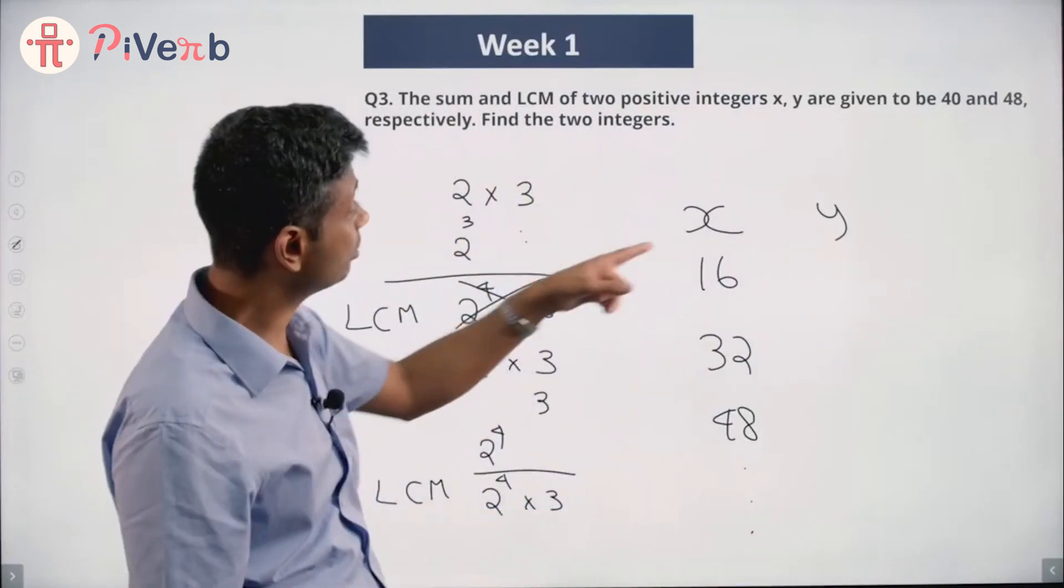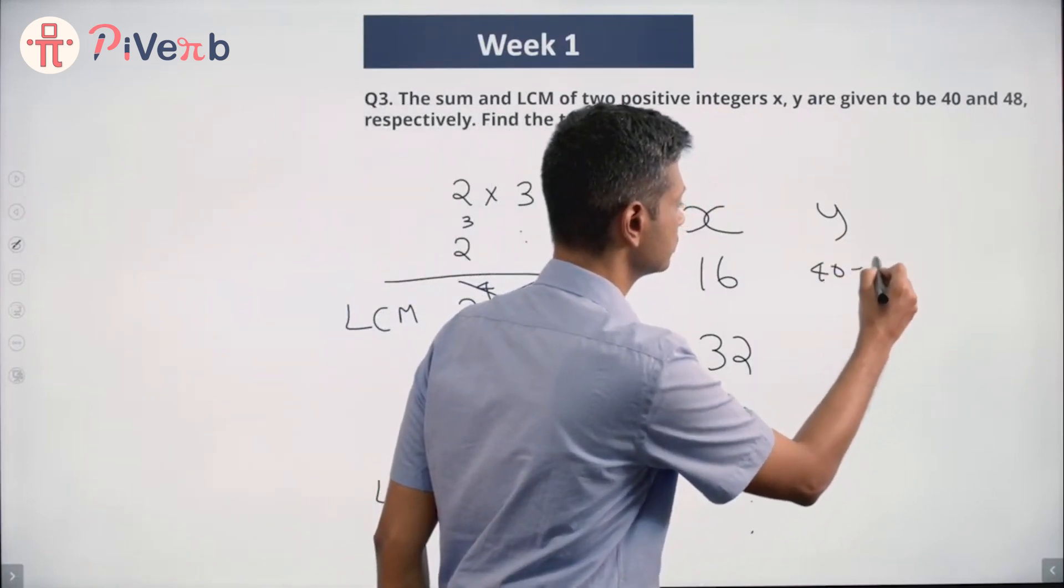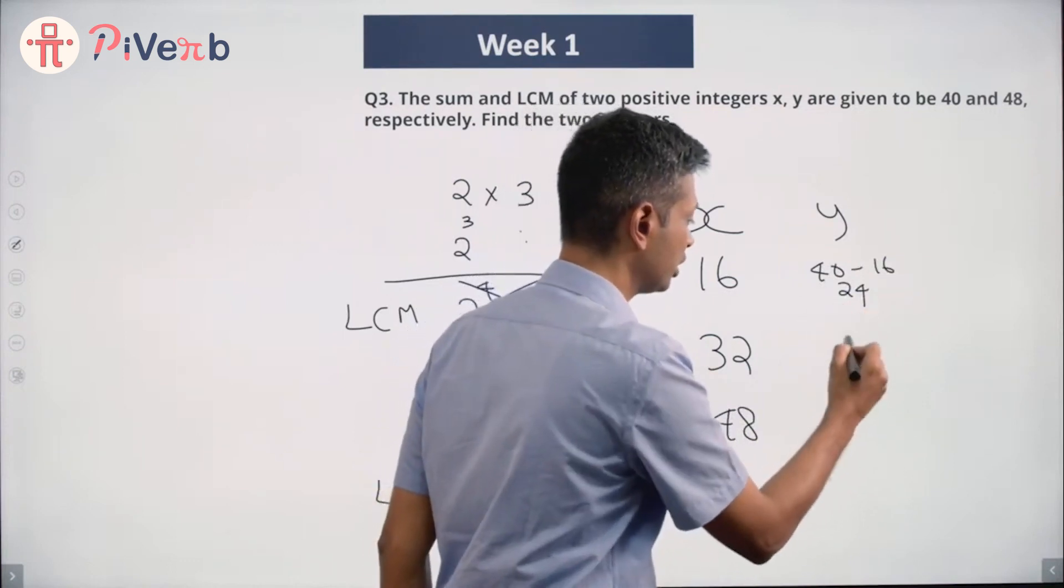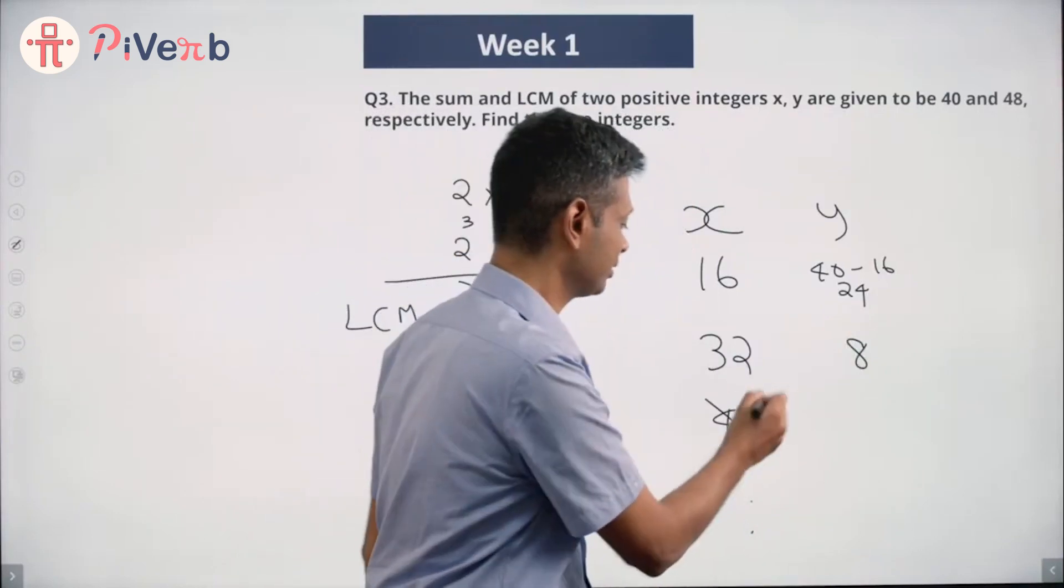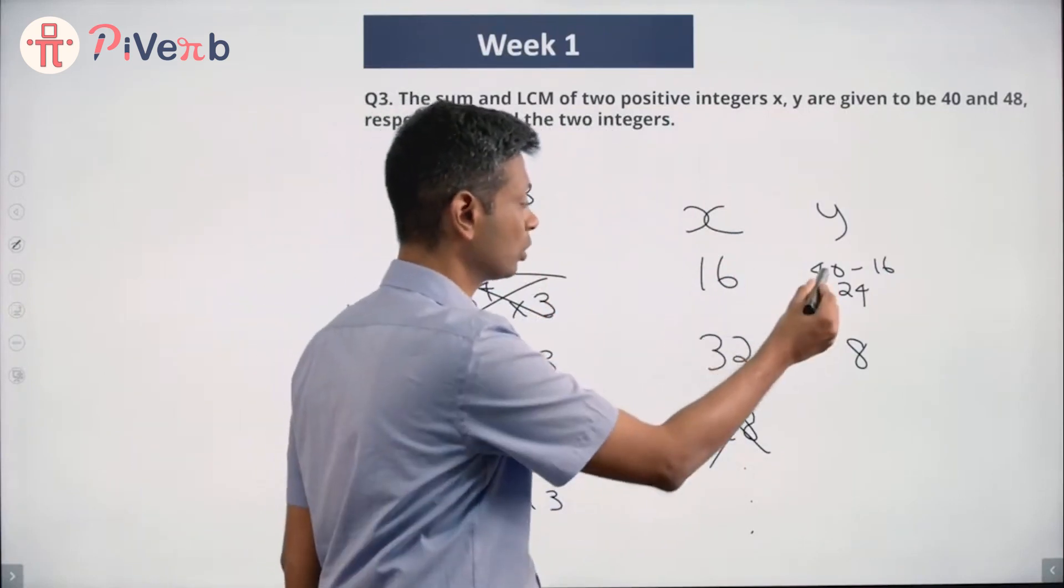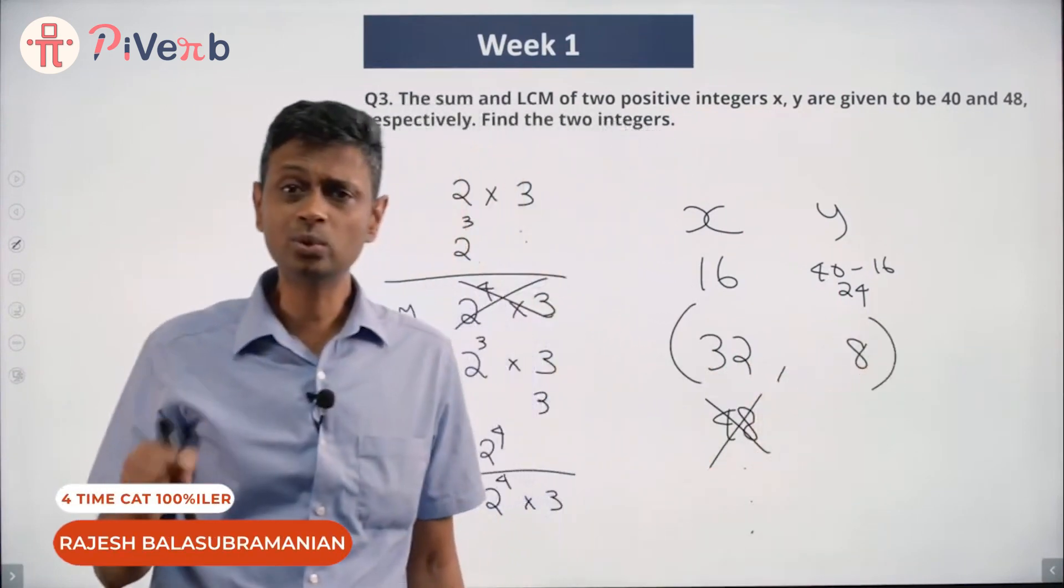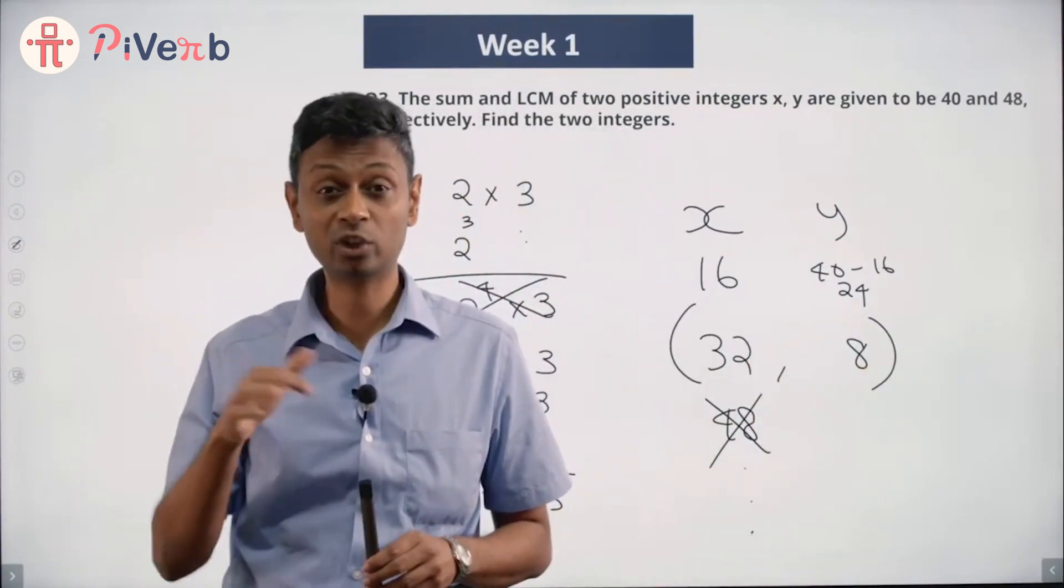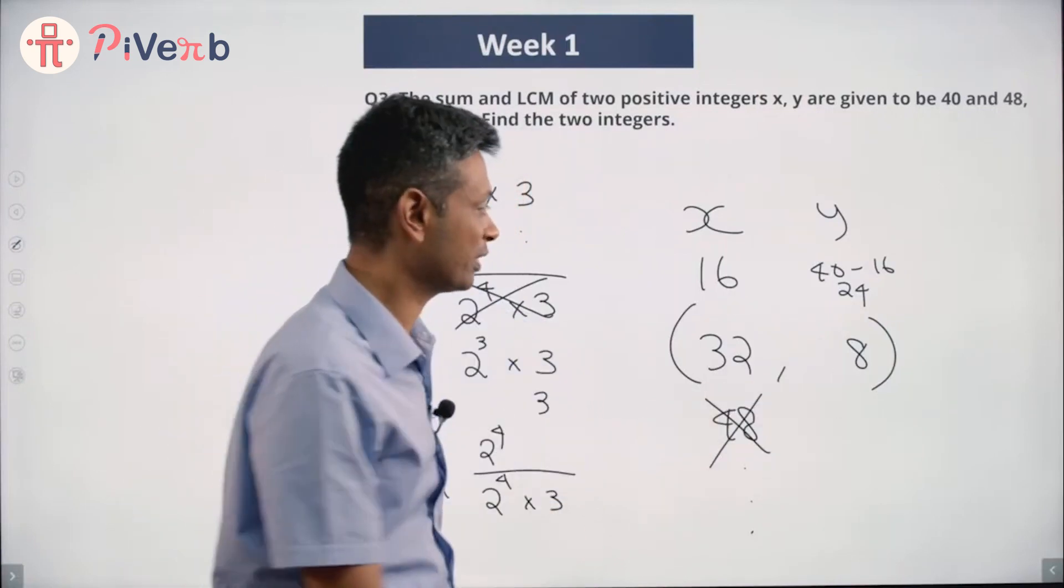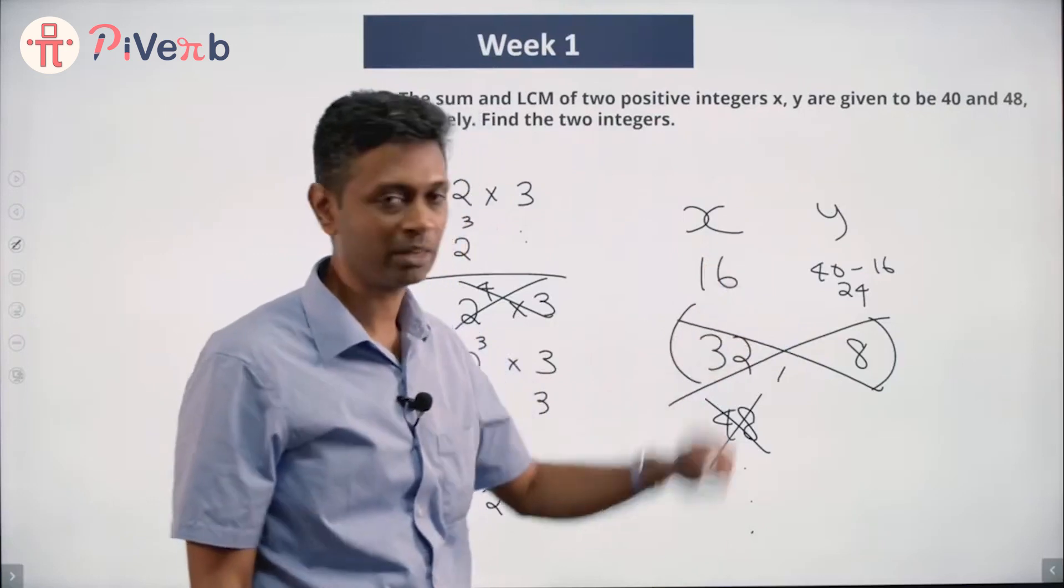We know that the sum of the two numbers is 40. So if this is 16, this number should be 40 minus 16, which is 24. If this is 32, it should be 40 minus 32, which is 8. This cannot be 48; that cannot be a negative number. So we have x and y are 16 and 24, or 32 and 8. Now this 32 and 8, wonderful combination. 32 is a multiple of 8; 8 is a factor of 32. LCM of 32 and 8 is 32, not what we are looking for. 16 and 24, LCM is 48. 16 and 24 add up to 40. Got it.